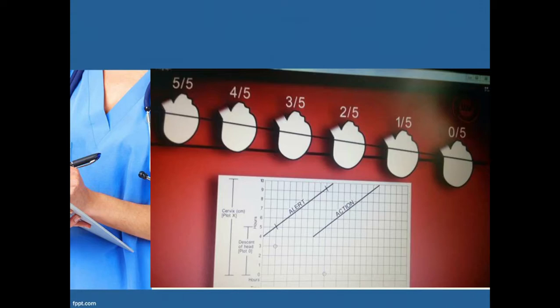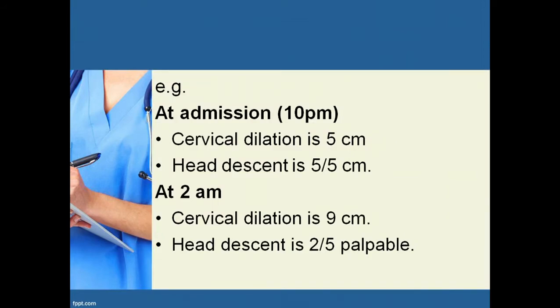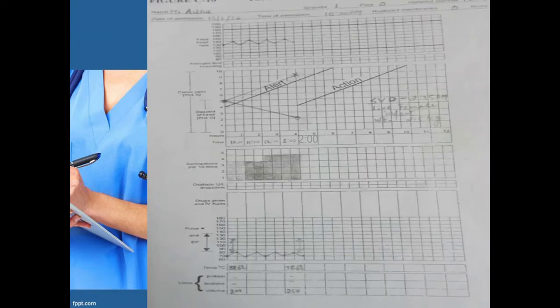The descent scale is: 5/5, 4/5, 2/5, 1/5, and 0/5. For example, at the time of admission at 10 PM, cervical dilatation is 5 cm and head descent is 5/5. At 2 AM, cervical dilatation is 9 cm and head descent is 2/5 palpable above the brim.